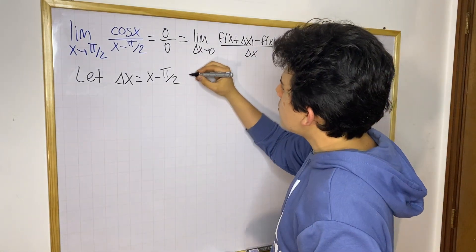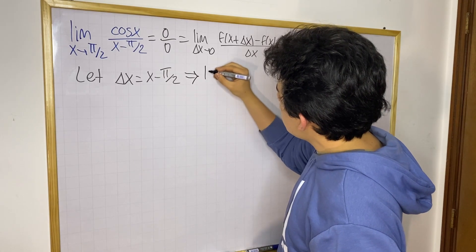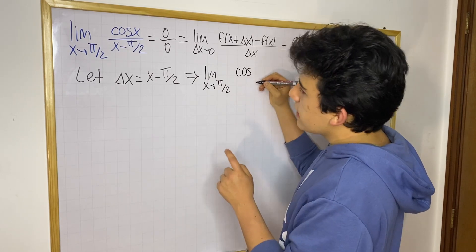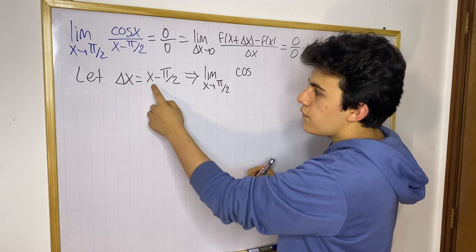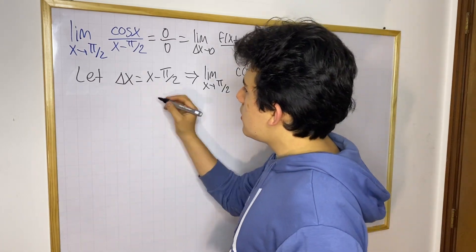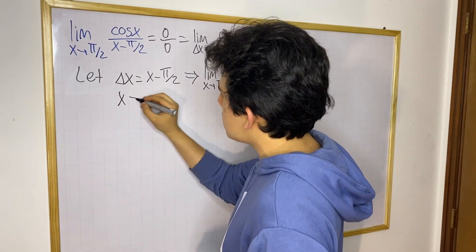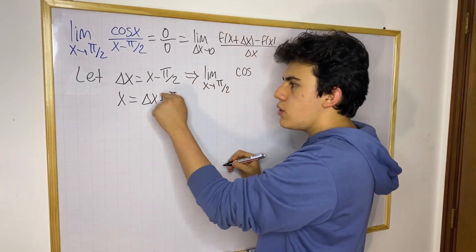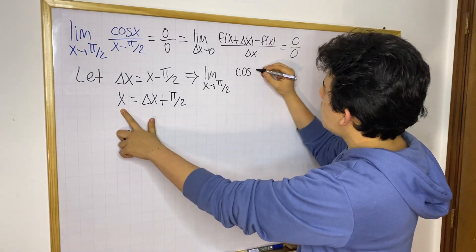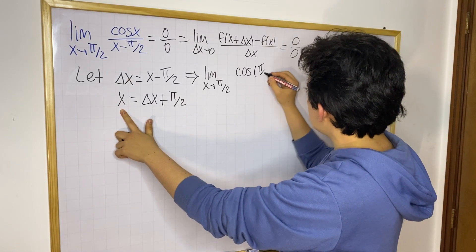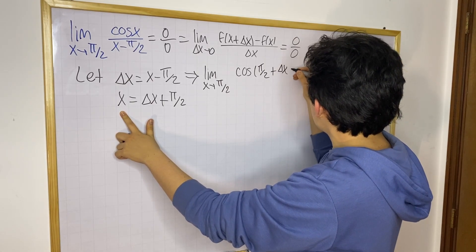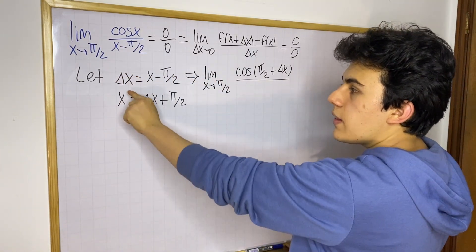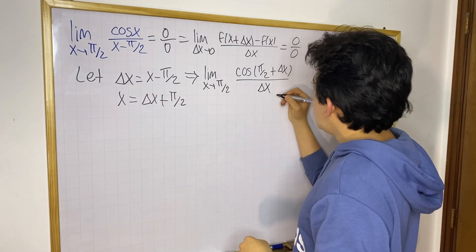So if we create this new variable, we can write our limit as the limit as x approaches pi over 2 for cosine x. Now we can change the value of x, because we can put the equation in terms of x: x equals delta x plus pi over 2. So we have cosine of (pi over 2 + delta x), divided by x minus pi over 2, which equals delta x.